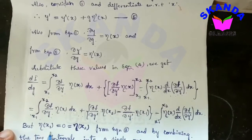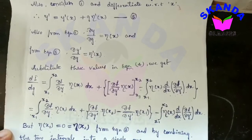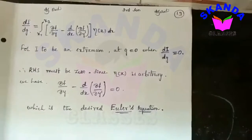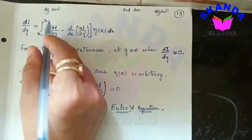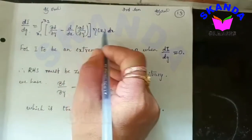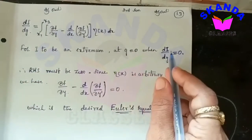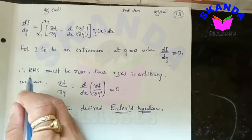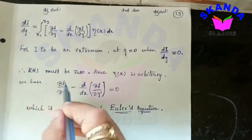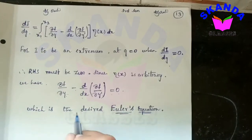But η(x1) equals 0 and η(x2) equals 0 from equation 2. By combining the two integrals into a single one, di/dg equals the integral from x1 to x2 of [∂f/∂y minus d/dx of ∂f/∂y'] · η(x) dx. For i to be an extremum at g equals 0, di/dg must equal 0; therefore the right-hand side must be 0. Since η(x) is arbitrary, we have ∂f/∂y minus d/dx of ∂f/∂y' equals 0, which is the desired Euler's equation.